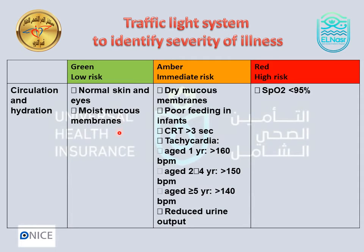About circulation and hydration: the green area shows everything normal — skin, eyes. In the yellow area, skin is dry, capillary refill time prolonged to more than a few seconds, and tachycardia. Heart rate thresholds: less than 1 year, more than 160; up to 40 years, more than 150; more than 50, less than 30 years, more than 90; less than 30 years, more than 100. Oxygen saturation less than 95% is also a concern.